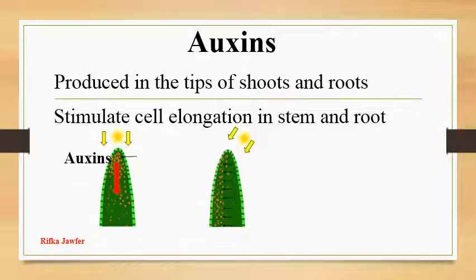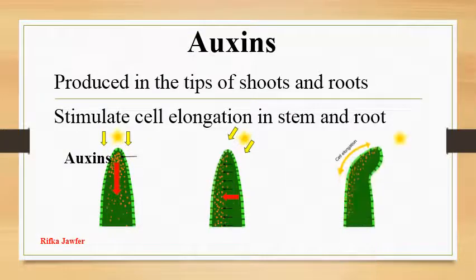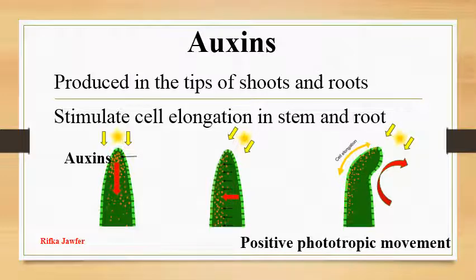When light falls from sides, auxin concentrate more in the side of the plant where intensity of light fall is low and they concentrate less in the other side. So auxins cause the cells in darker side grow longer than the corresponding cells on the other side. This causes curving of the plant's stem towards the light. This is called positive phototropic movement.